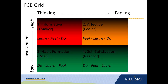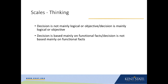Recall that we have two dimensions. One is a relative dimension of thinking over feeling, and the other is involvement. The items that measure thinking are: 'decision is not mainly logical or objective' or 'decision is mainly logical or objective.' These items are always set up as bipolar scales, and then 'the decision is based mainly on functional facts' or 'the decision is not based mainly on functional facts.'